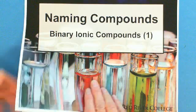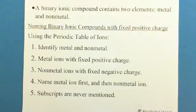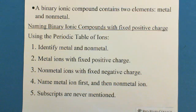This session is showing you how to name a binary ionic compound. A binary ionic compound contains two elements, metal and a nonmetal. And naming binary ionic compound with fixed positive charge, which means in this kind of binary ionic compound, the metal has fixed positive charge.